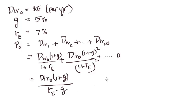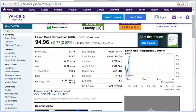This simplifies to: div0 times (1 + G) divided by (RE minus G), assuming that the rate of return is greater than the dividend growth rate. Let's now apply this in the context of ExxonMobil.